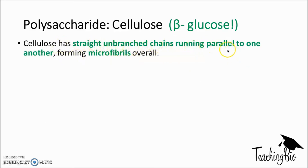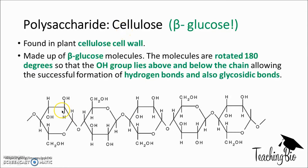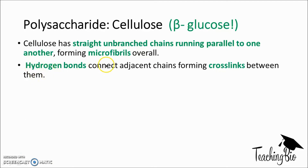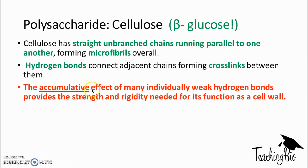Cellulose has straight unbranched chains running parallel to one another, forming microfibers overall. A way to remember this is that cellulose has two L's in it, representing the parallel chains. The hydrogen bonds from the OH groups connect the adjacent chains, forming cross-links between them. Remember hydrogen bonds are quite weak, but it's the cumulative effect of all the individual hydrogen bonds that provides strength and rigidity for the cellulose molecule to function as part of a plant cell wall.